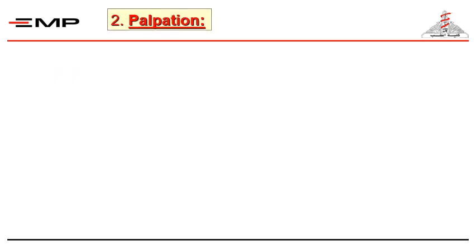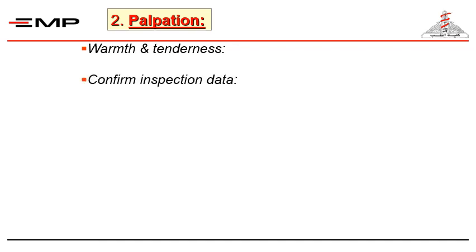Second comes palpation, which is a very important component of the examination. The first thing to comment on is warmth and tenderness — inflammatory lesions are warm and tender. Assess skin temperature with the dorsal surface of your fingers, and you can see the effect of tenderness on the patient's face. Then confirm the data elicited by inspection — namely the size, surface, and edge — which are more accurately judged by palpation.